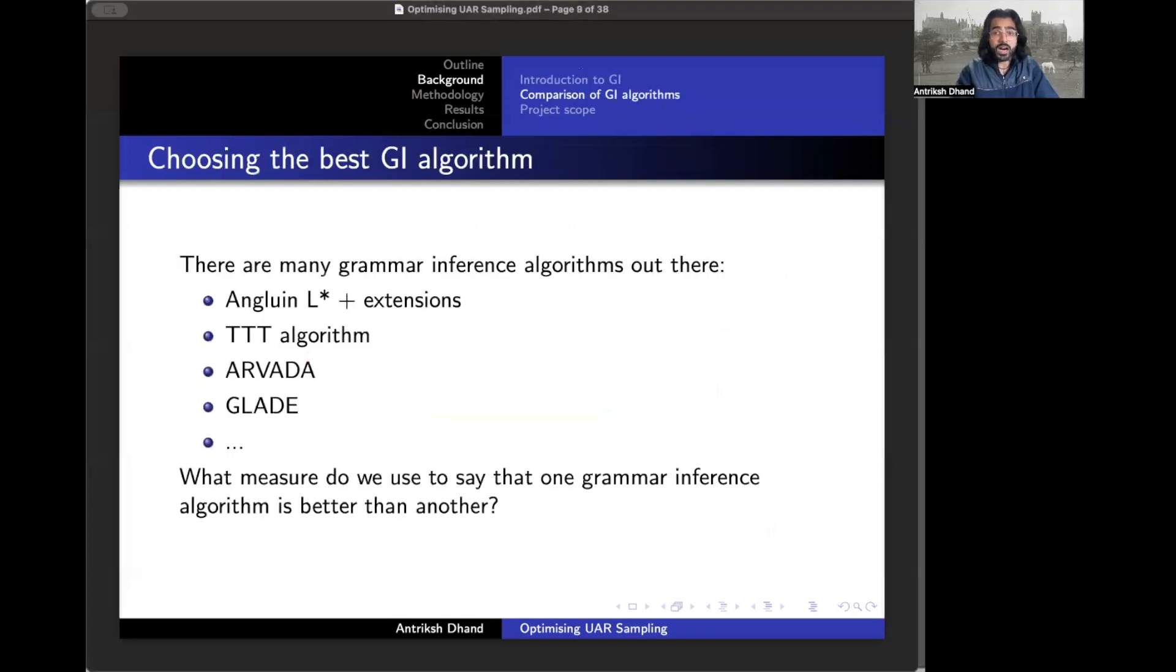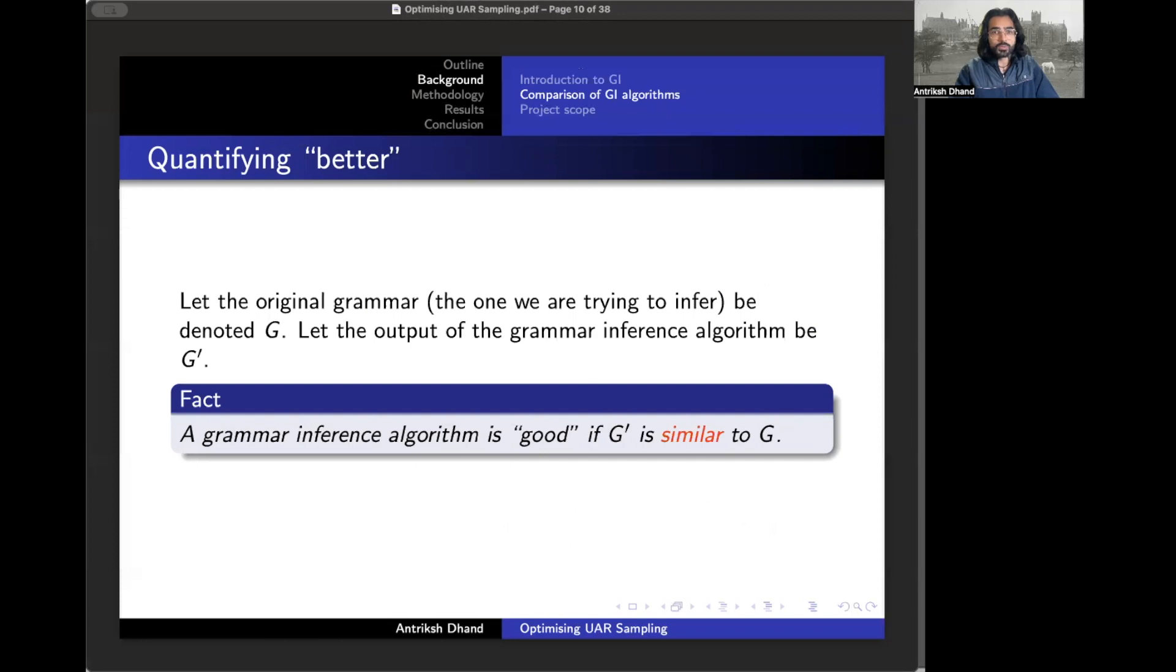Specifically, our project focuses on how can we conclude that one grammar inference algorithm is better than another? How do we quantify the effectiveness of learning a new language? Well, this is no different to learning a new human language. If I was learning Spanish, I'd say I was good at Spanish if the words that I could speak matched the words in the Spanish language well. In the same way, a grammar inference algorithm is good if the inferred grammar is similar to the original grammar.